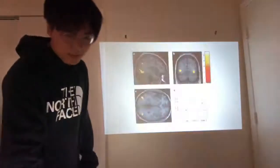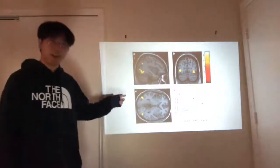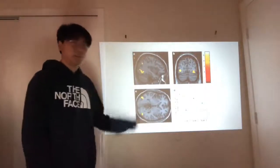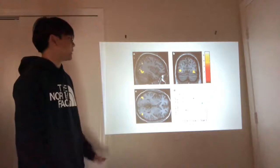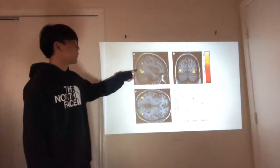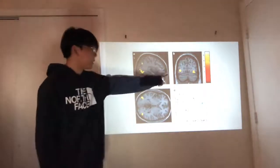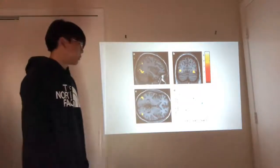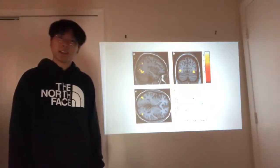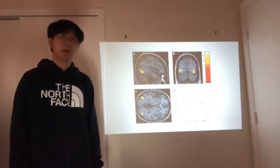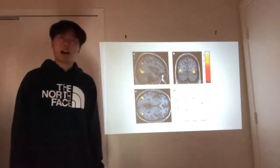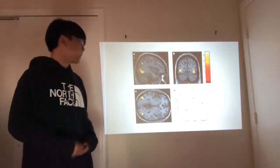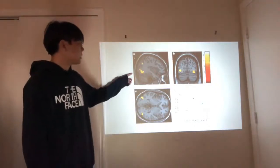Three months later, this is Snoop's brain. If you look at these yellow spots, those yellow spots actually indicate the increase in brain tissue in Snoop's brain. Why did his brain tissue increase? Because of learning. After learning how to juggle for three months every day, his brain actually increased in tissue size.